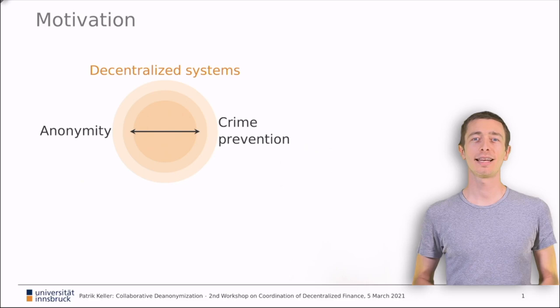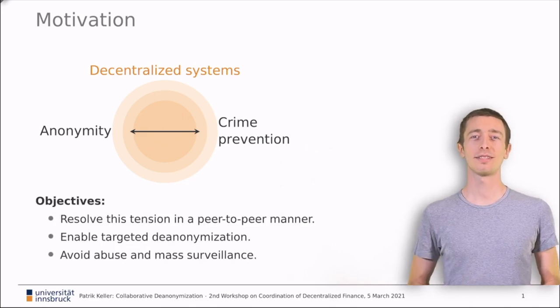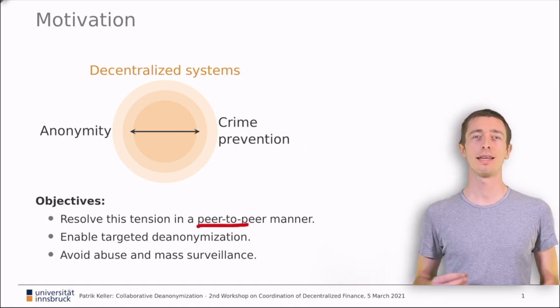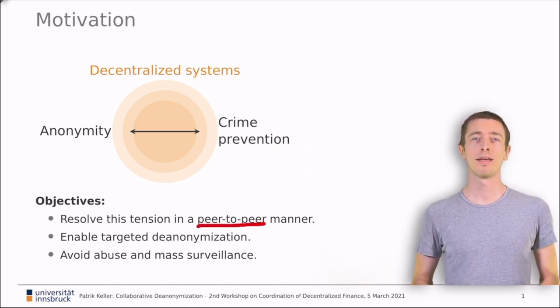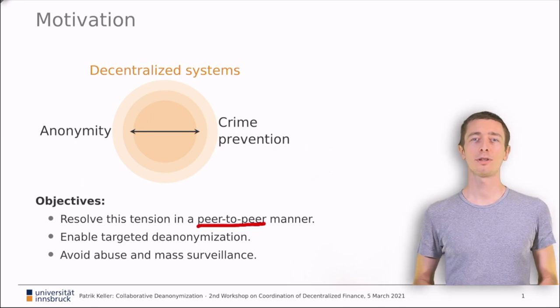In this setting, it is particularly unlikely that the police gets privileged access for de-anonymization. Our main objective is to solve the tension between anonymity and crime prevention in a peer-to-peer manner. So in the very same spirit that these cryptocurrency systems are built in. We want to enable targeted prosecution of bad crimes, but we also want to avoid abuse and mass surveillance by state or police.